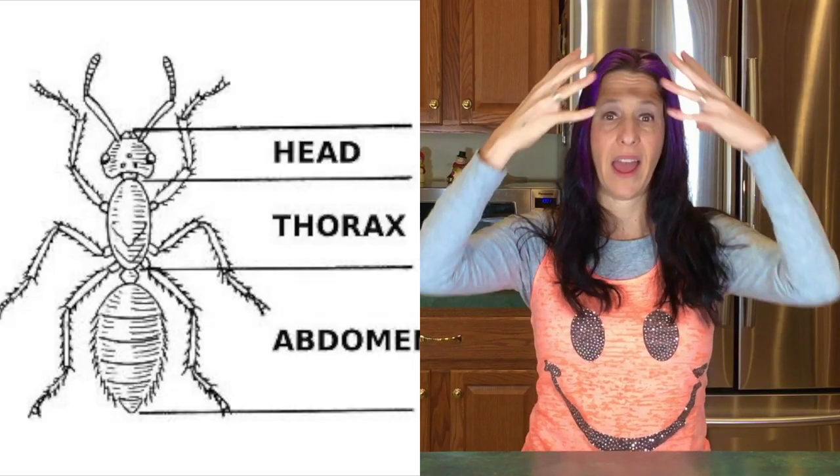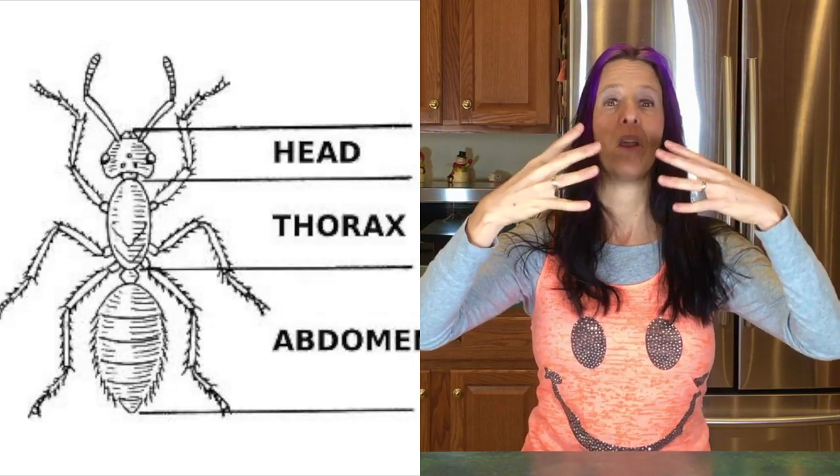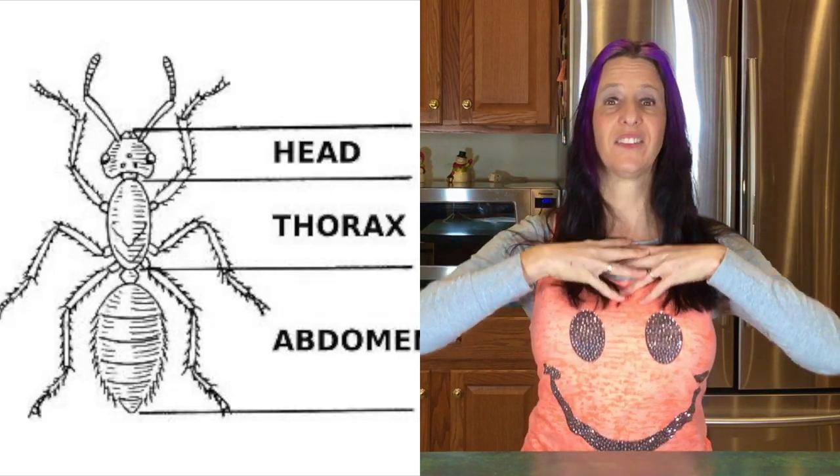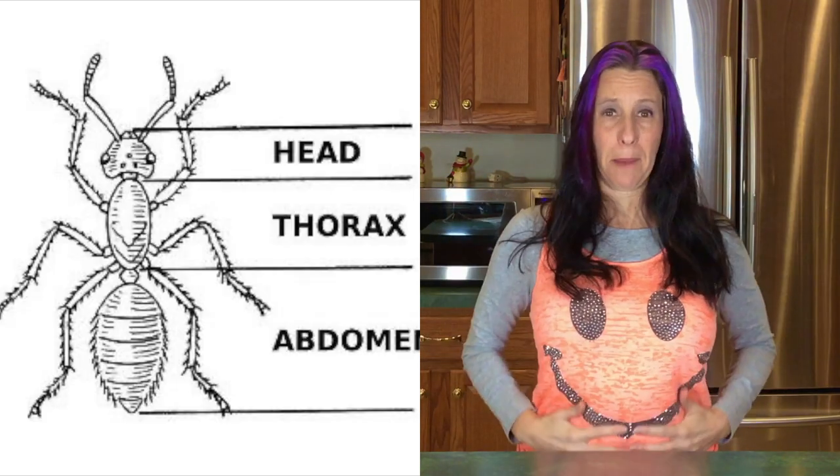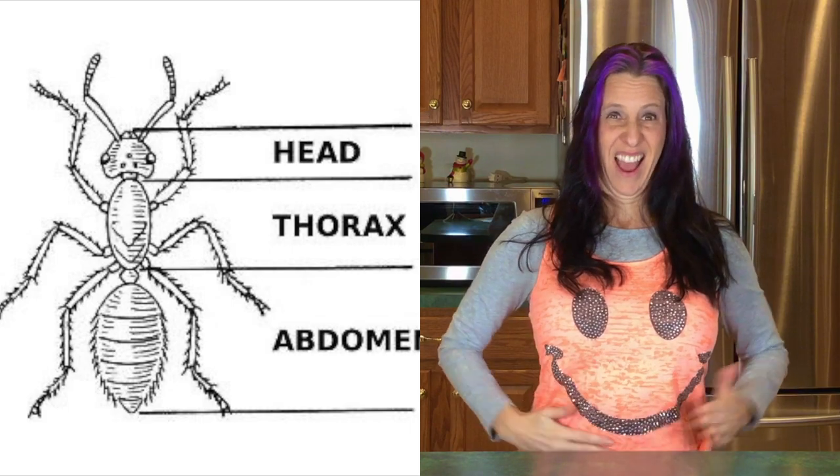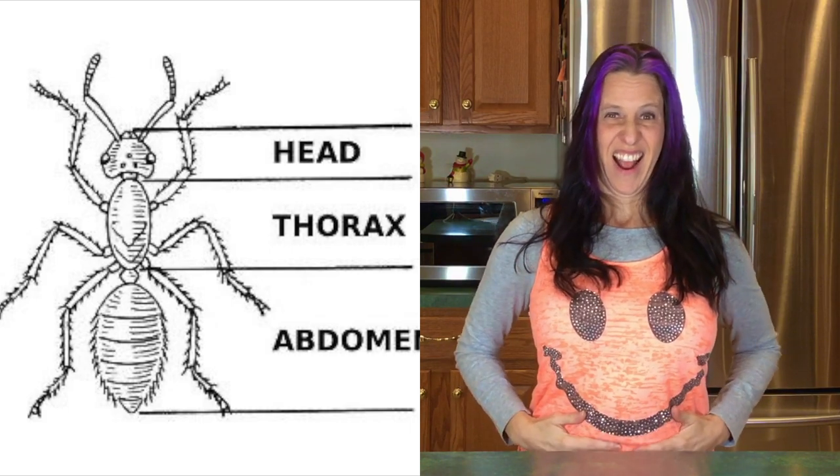Insects have three body parts: a head, a thorax, and an abdomen. And their skeleton on the outside is very hard. It's pretty interesting.